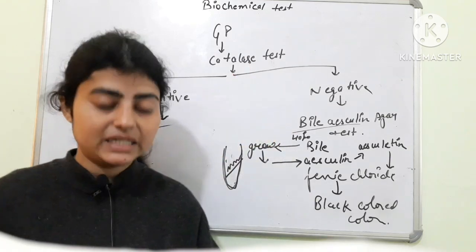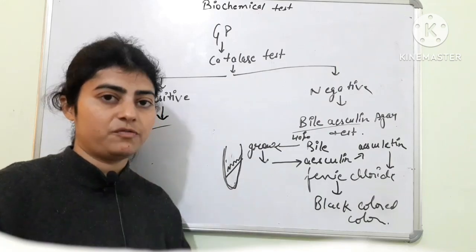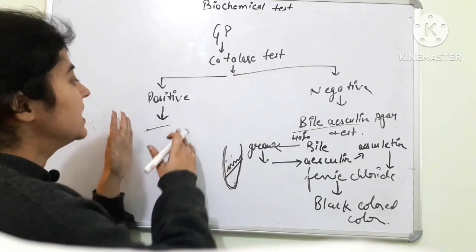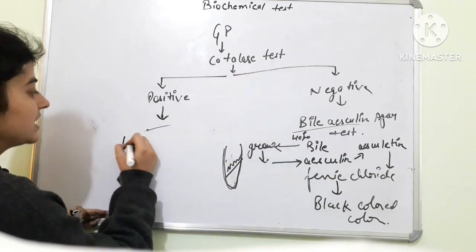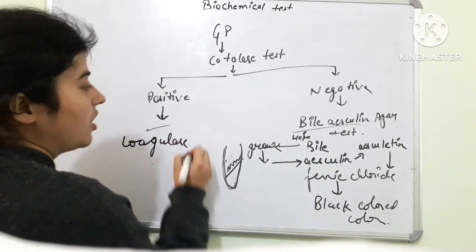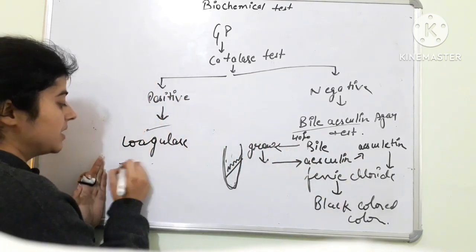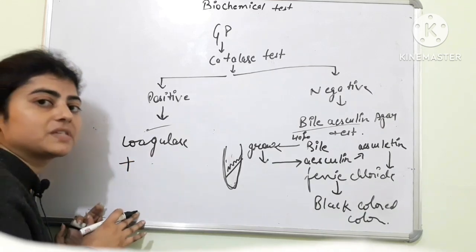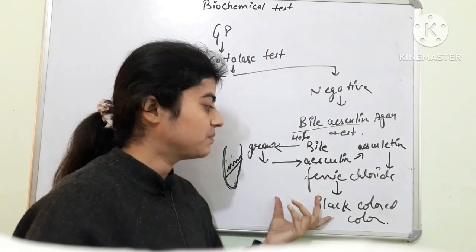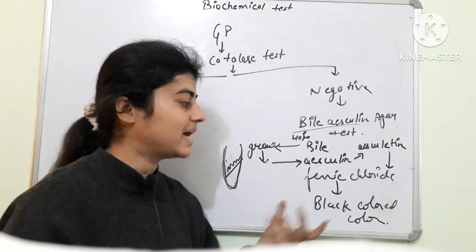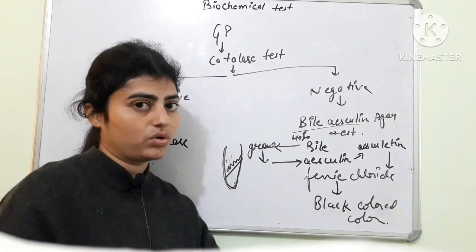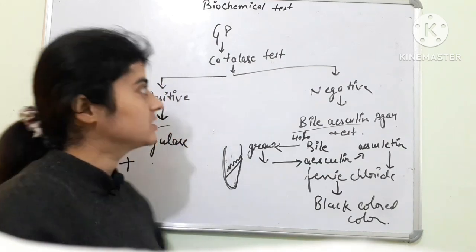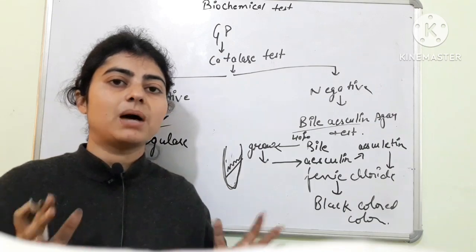So to summarize gram positive: if the colony is gram positive, first perform catalase. If catalase is positive, perform coagulase — a positive coagulase confirms Staphylococcus aureus. If catalase is negative, perform bile esculin agar — positive results (black-colored colonies) indicate Group D Streptococci, known as Enterococci. Now we will move on to discuss gram negative bacteria.